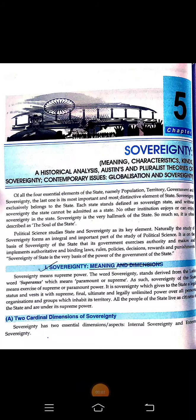Let's begin with chapter number 5 from your political science book of grade 11. The name of the chapter is sovereignty. First of all, we need to understand what is the meaning of sovereignty. This term itself means supreme power.